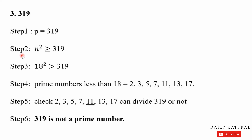Third example: 319. Step 1, P equals 319. Step 2: check N squared greater than or equal to 319. We choose N equals 18, since 18 squared is 324, which satisfies the condition. Step 4: list the prime numbers up to 18. Check: 11 divides 319 exactly, so 319 is not a prime number — it is divisible by 11.